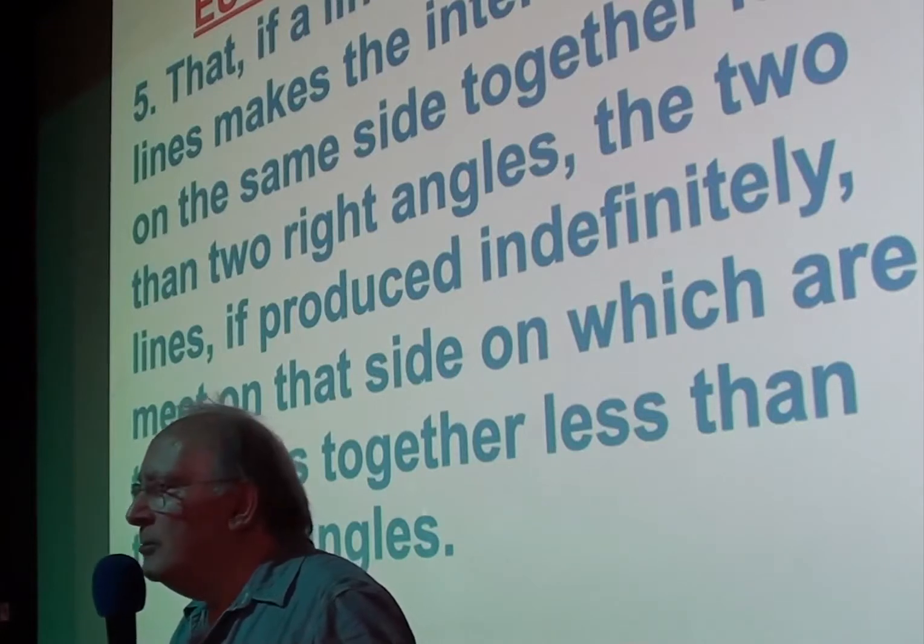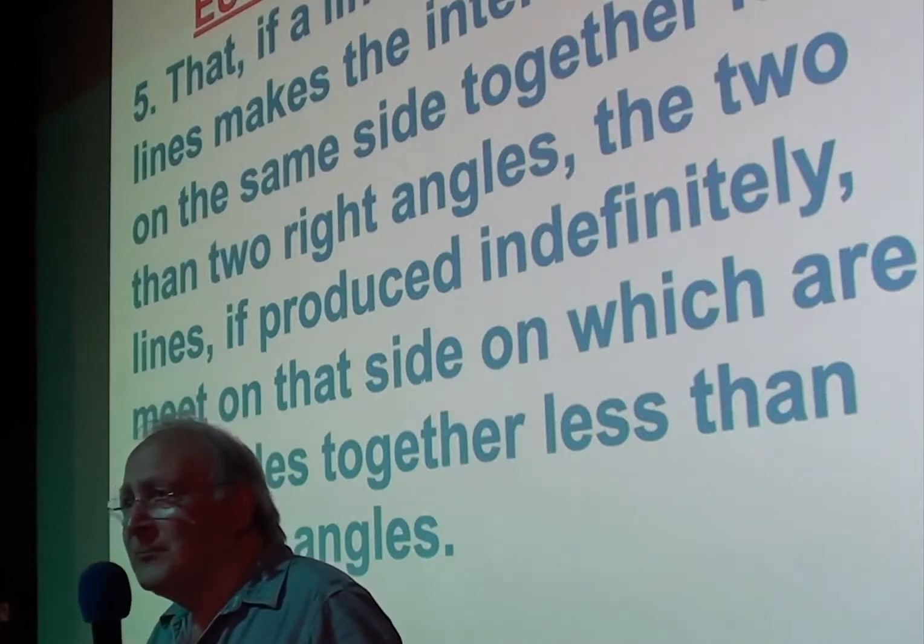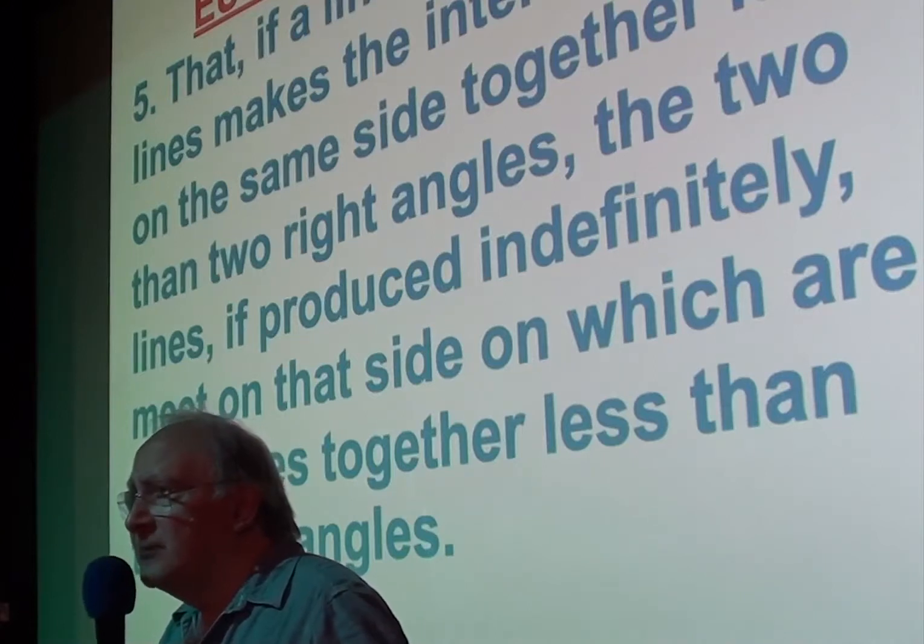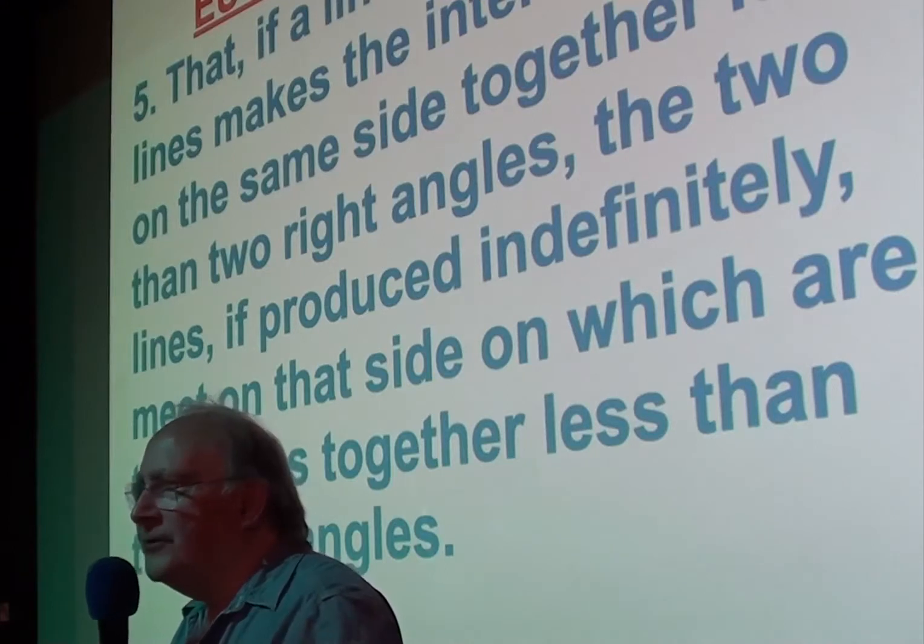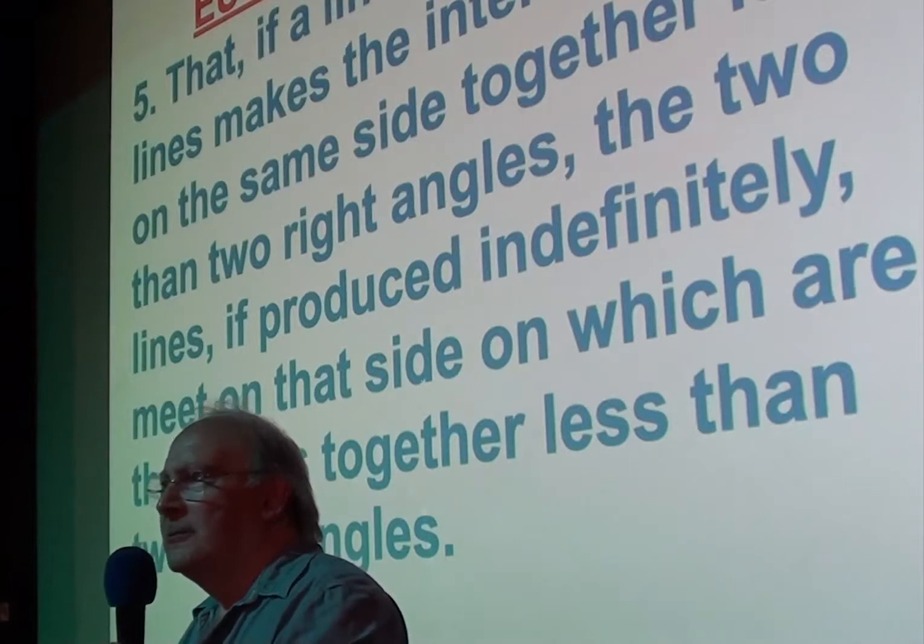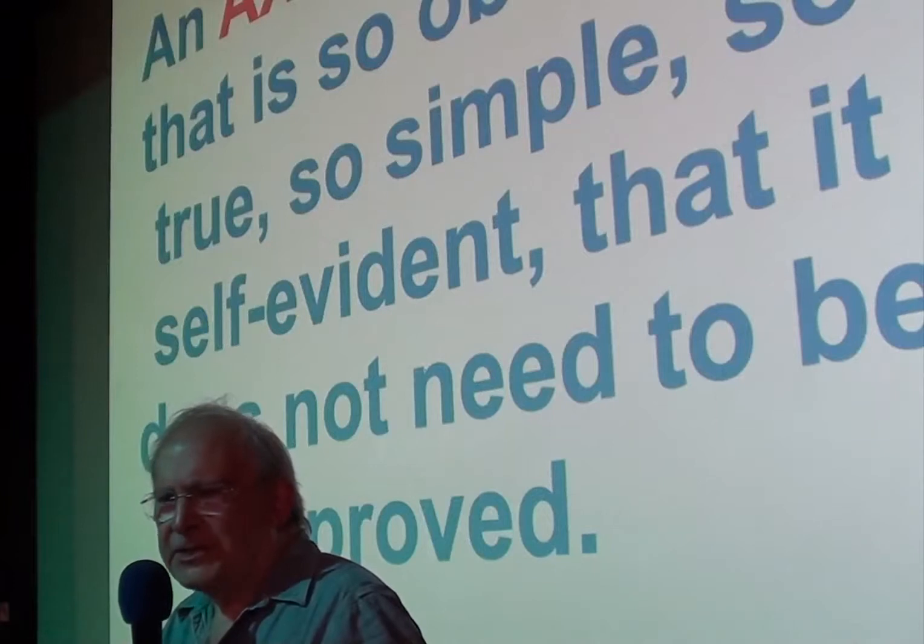So, people were unhappy. Mathematicians throughout the centuries were very unhappy with this fifth axiom. That's not simple. We don't want that as an axiom. So, first of all, they tried to get rid of it as an axiom. They said, well, maybe we don't need it. But they found they couldn't. They needed it to prove all the other theorems. Then they thought maybe they could prove it from the other axioms. So, if they could prove it, then it doesn't need to be an axiom. Because an axiom doesn't need to be proved.